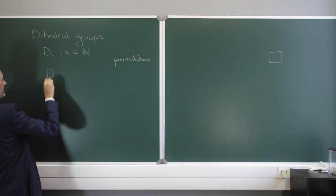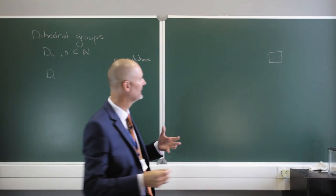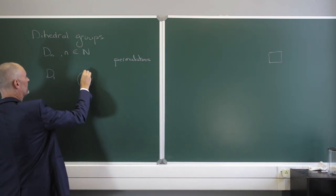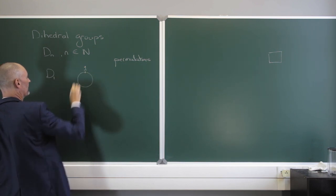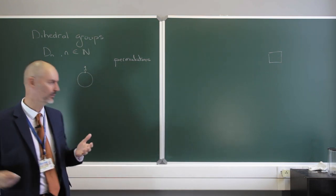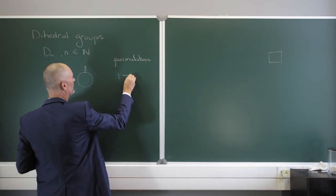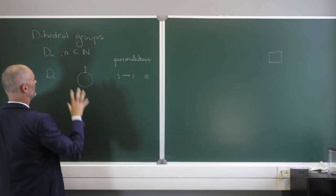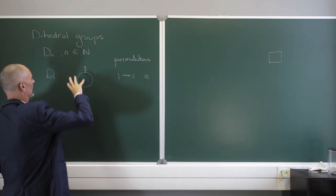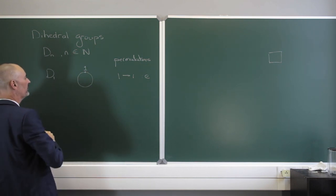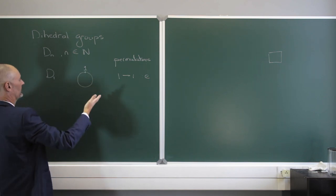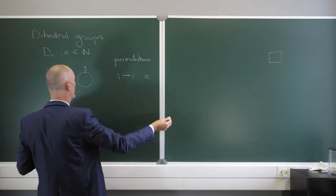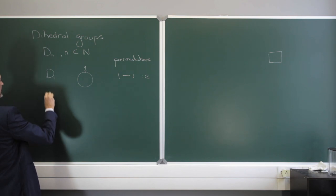Let's start with D1. If we imagine something — let's not stick to a square, because a square has four sides. Let's stick to something a bit easier to see, just a circle with 1 element. If we permute 1, it's just 1 goes to 1. There's just the identity element. What I could do through symmetry is rotate it through 2π radians, a full 360 degrees, and it will look exactly the same. Or if I were to flip it, it would stay the same. But 1 is just mapped to 1 — that's all I have, and that's not very interesting.